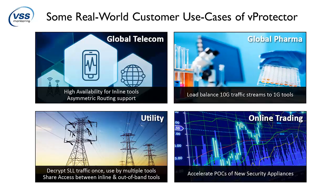A global biotech company uses vProtector to scale advanced threat protection and web security across 10 gigabit links in their data centers, ensuring protection as the network upgrades. A major national utility uses vProtector to decrypt high-speed SSL traffic flows and shares access to clear traffic between a variety of inline and monitoring devices, saving hundreds of thousands of dollars. And a leader in online trading uses vProtector to accelerate proof-of-concept tests of new security devices, reducing evaluation times by more than 70%.